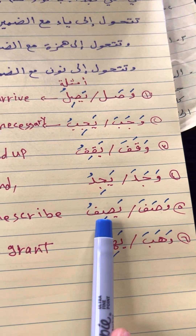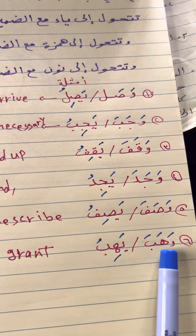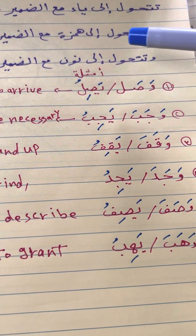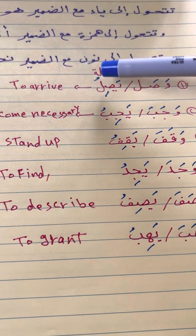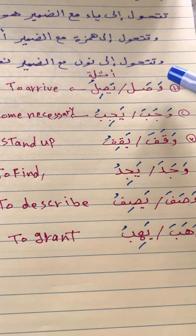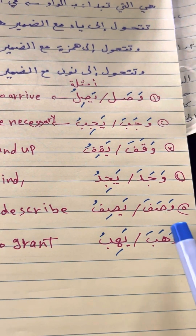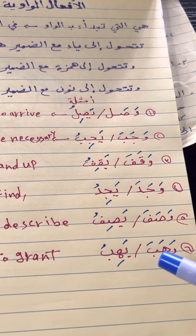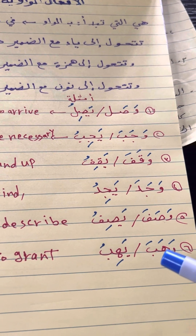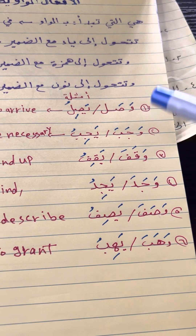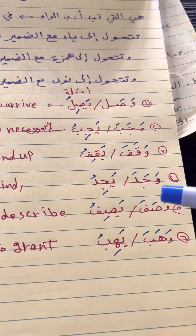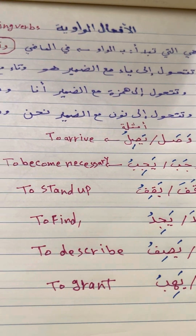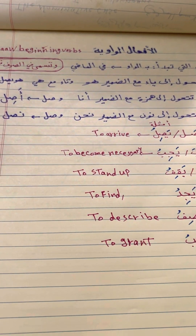More examples: waasafa / yassifu — to describe. Wahaba / yahibu — to grant. Waada / yaidu — to promise. So verbs like waasala, wajaba, waqafa, waada, wajada, wazafa, wahaba start in the past with waaw and in the present with yaa. This category is called al-af'aal al-waawiyya, or fa'al mithal waawiyya. Wa salamu alaykum wa rahmatullahi wa barakatuhu.